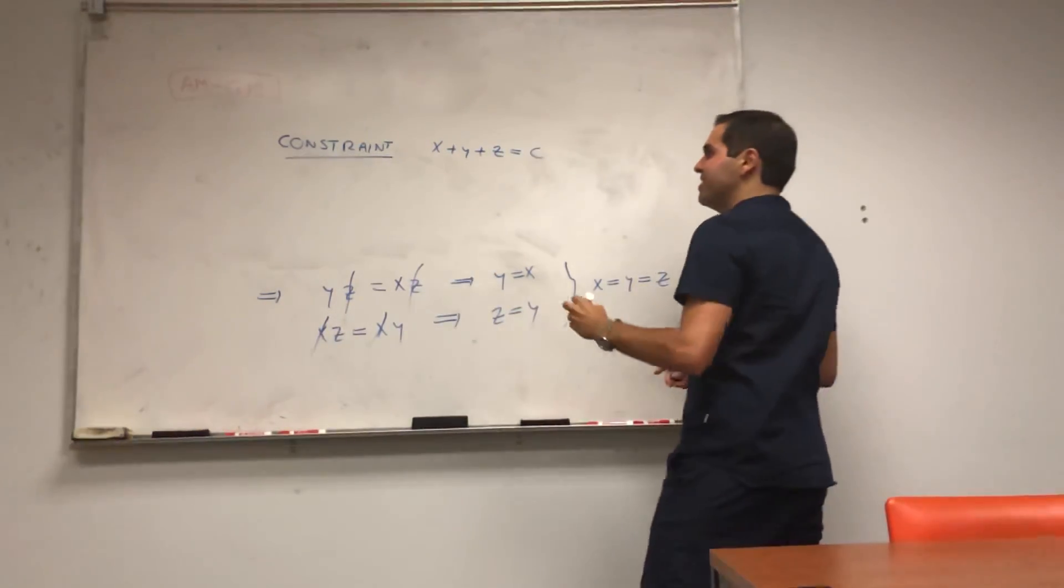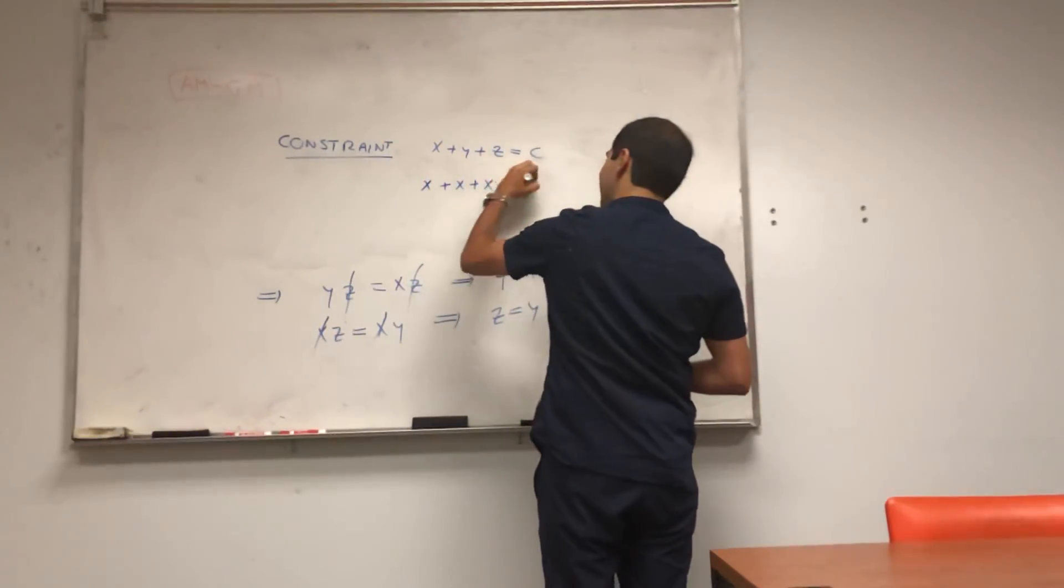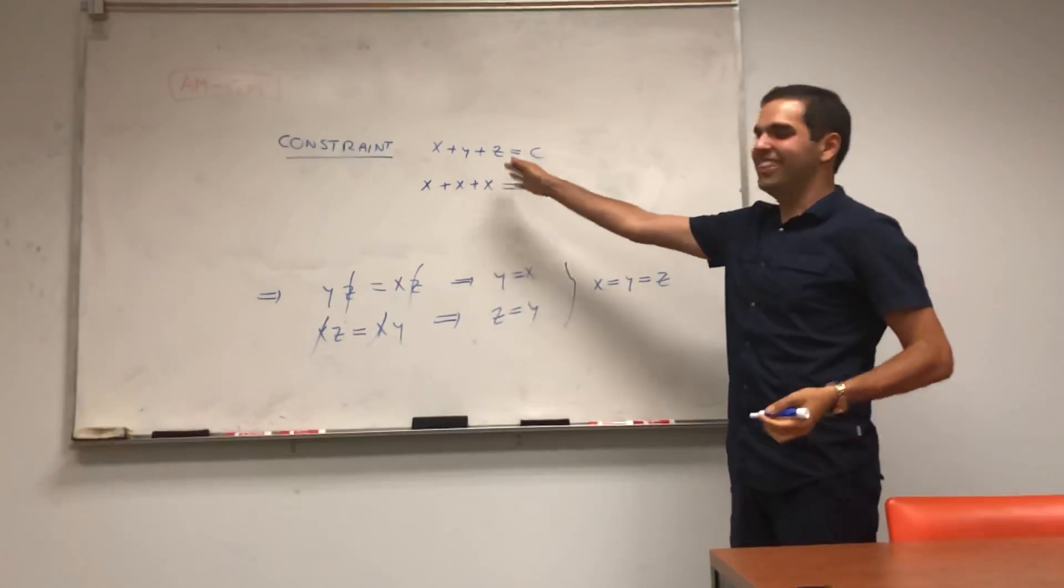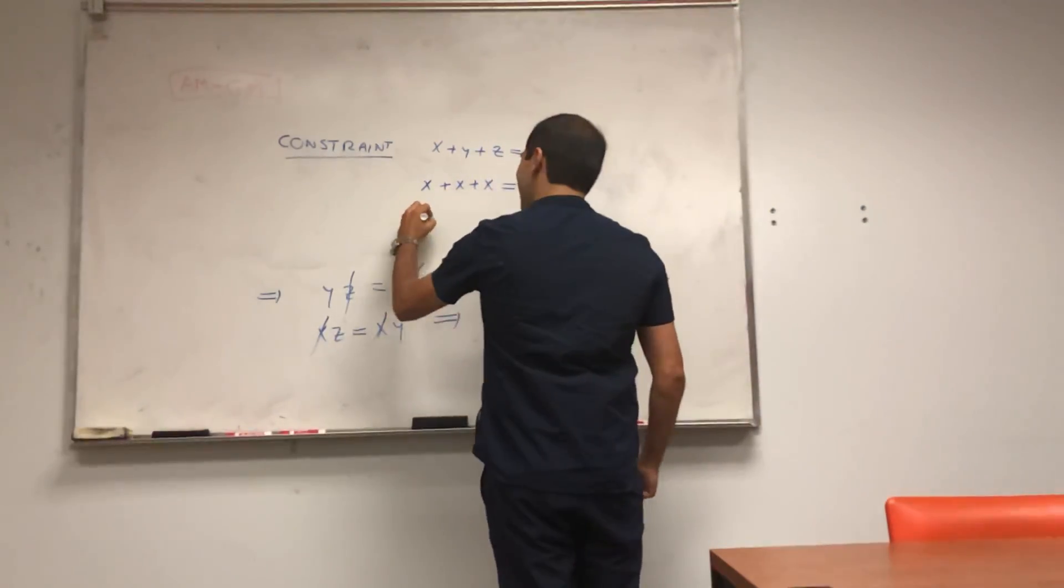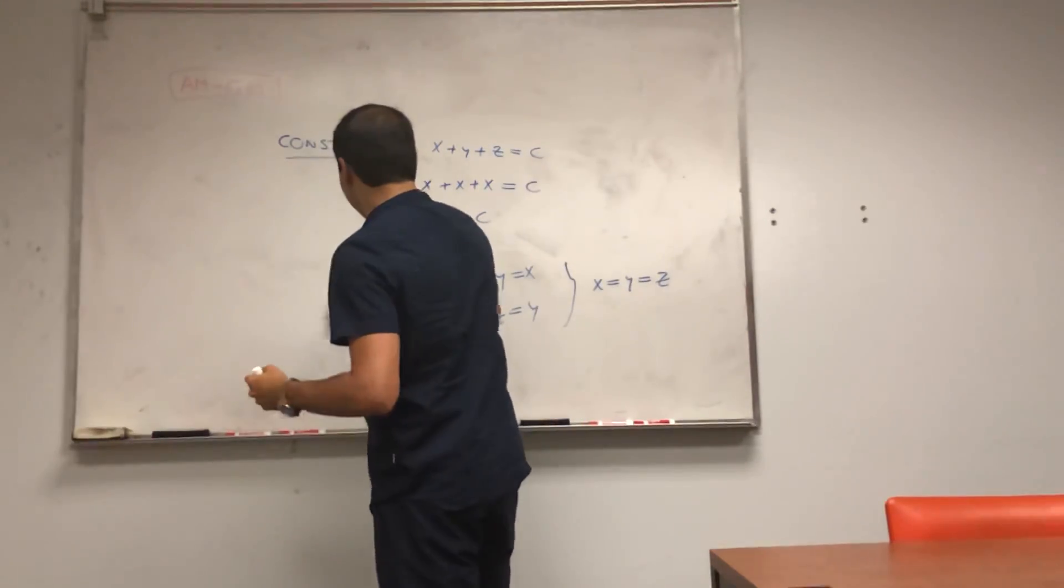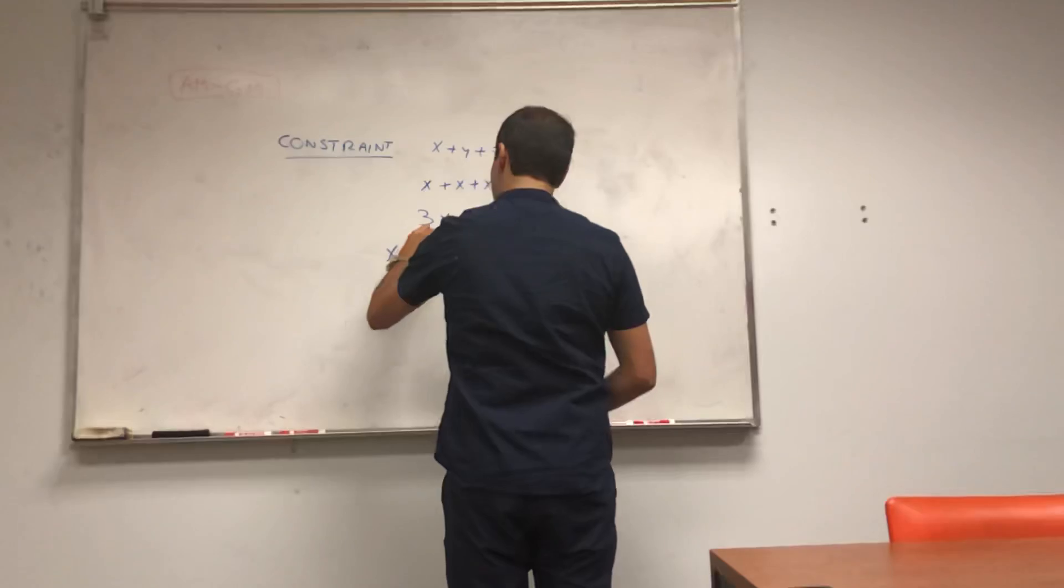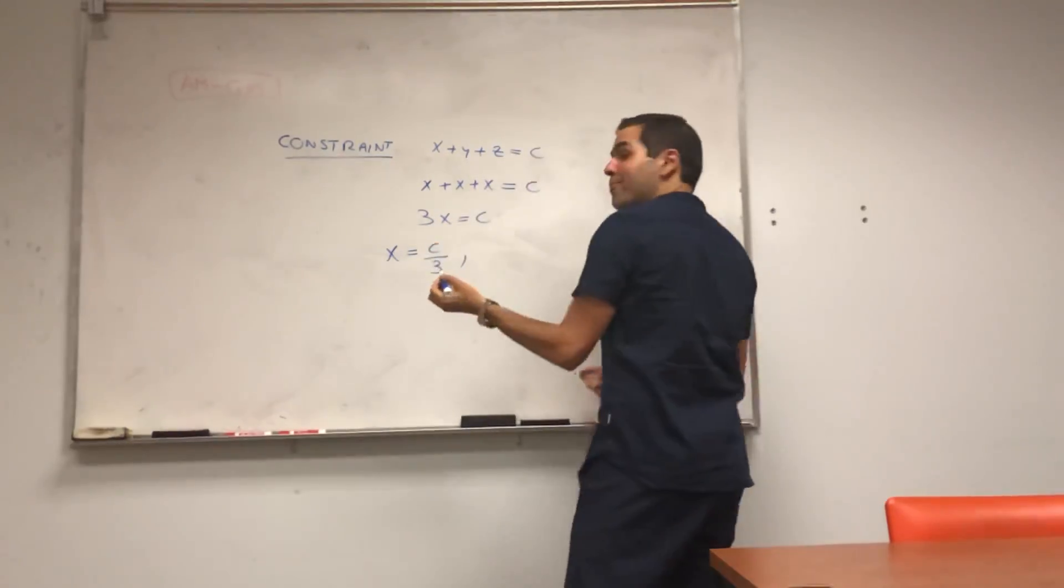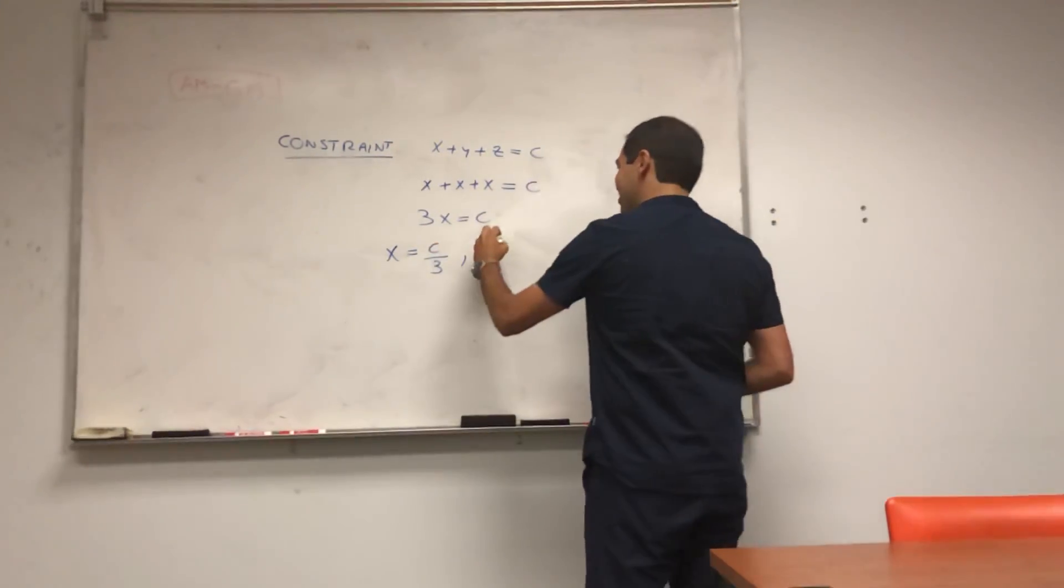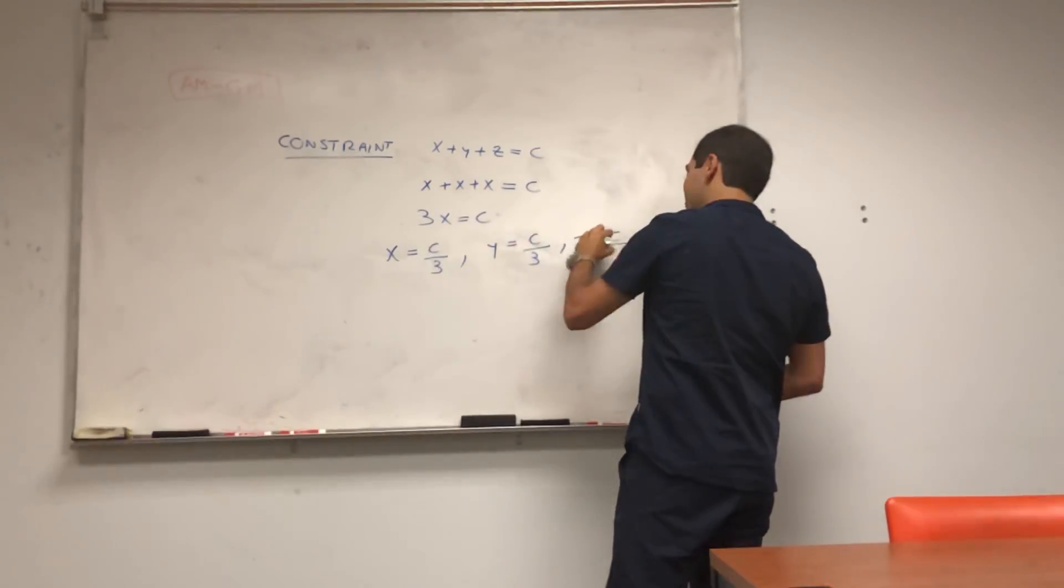Now let's plug in x equals to y equals to z. So x plus x plus x equals to c. So 3x, okay. 3x equals to c. And therefore, x is c over 3. But remember, x equals to y equals to z. So y is c over 3. And z is c over 3.